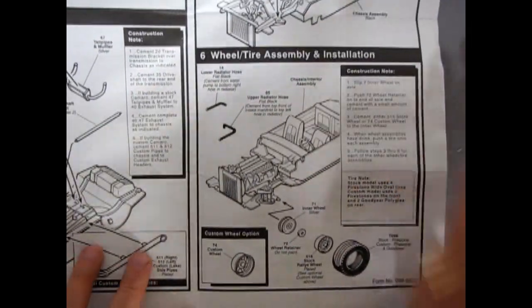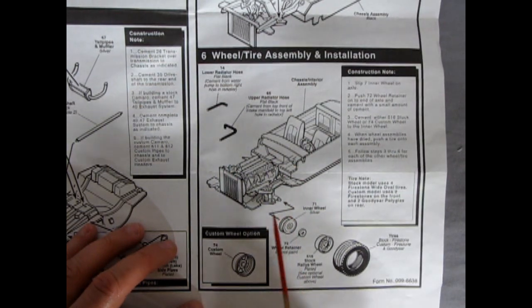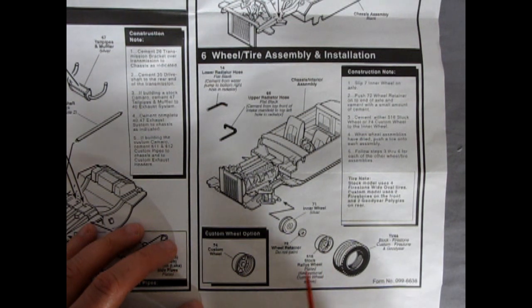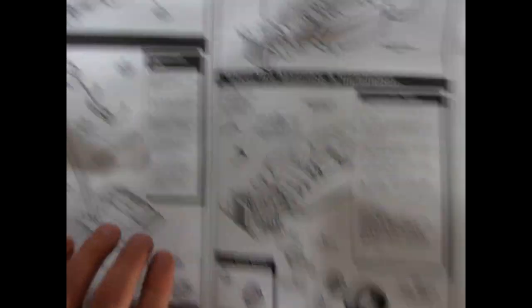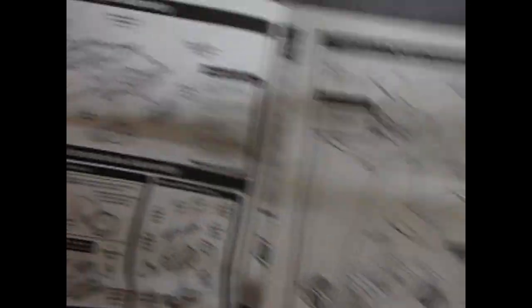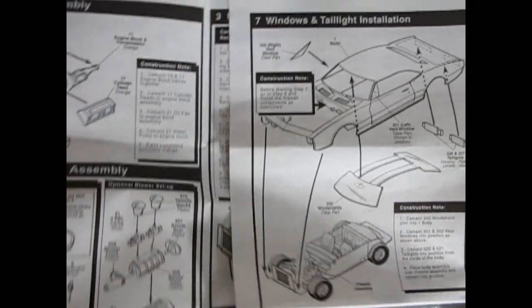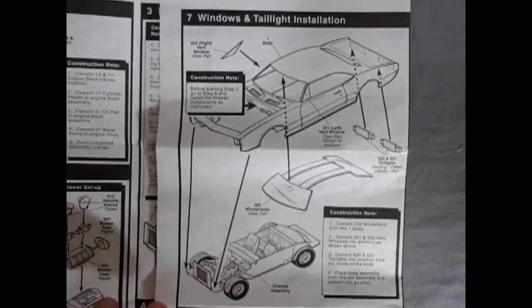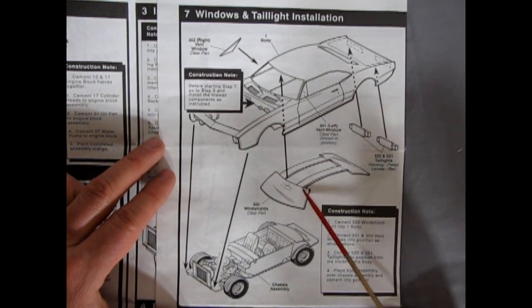Then, of course, we're down here. We have the radiator hoses going in, and then our wheels going on with our wheel retainer. Then we pop on our stock rally wheels and the tires. And it says stock are the Firestones. Customs are Firestone with a mix of Goodyear's.